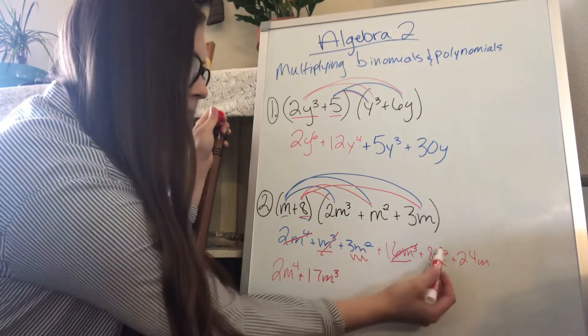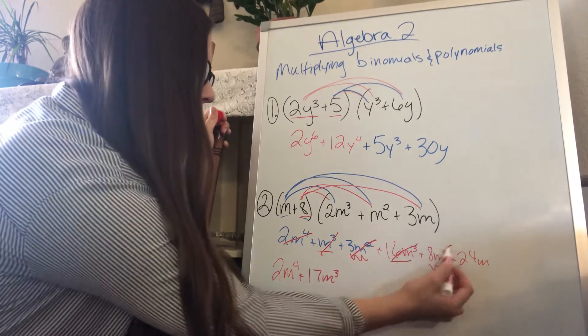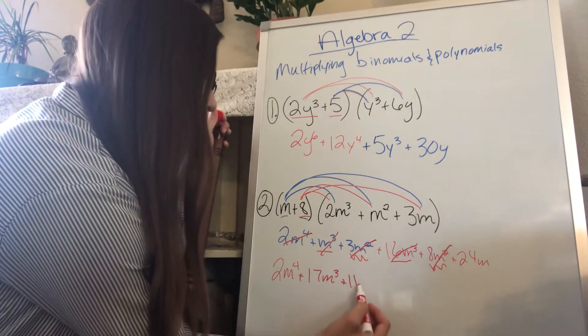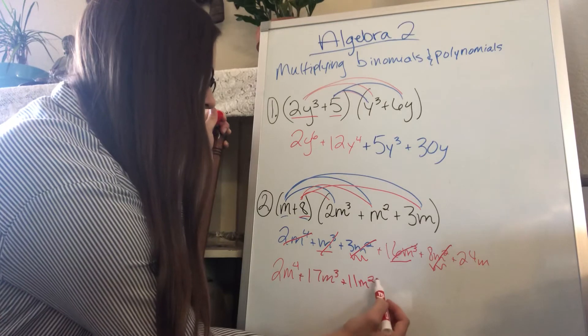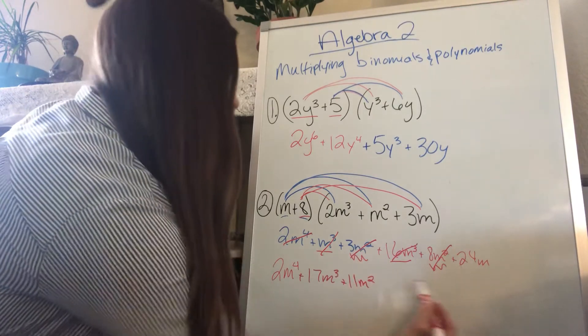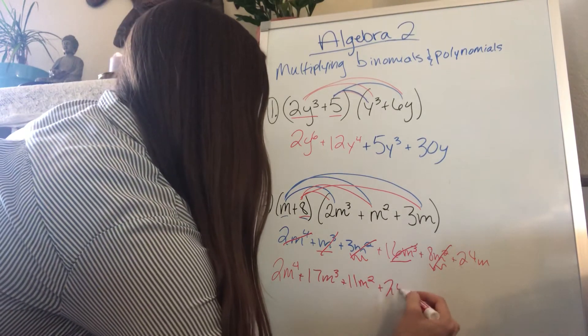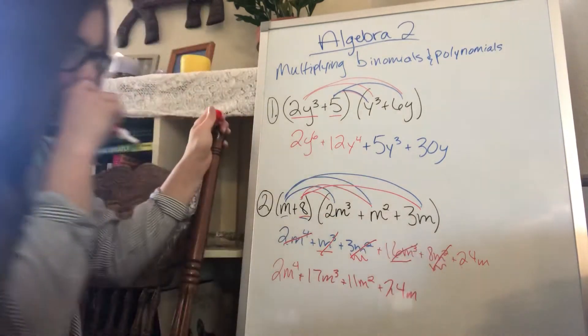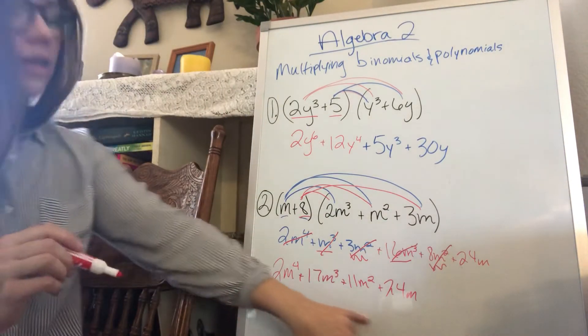My 3m squared and my 8m squared become 11m squared. And then I just bring down my 24m because I don't have anything to combine with that. And you're done because it is also again in standard form.